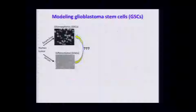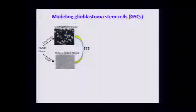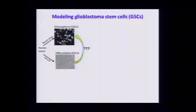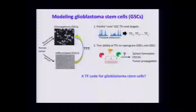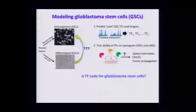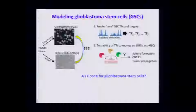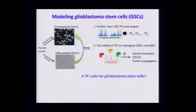This was very interesting to us and led us to the question of whether we could reprogram these differentiated cells into tumor-propagating glioma spheres. We set up a strategy where we looked at the enhancer landscapes and transcription factors, and then tested the ability of these TFs to reprogram the cells into glioma spheres — whether we could identify something like a TF code for glioblastoma.